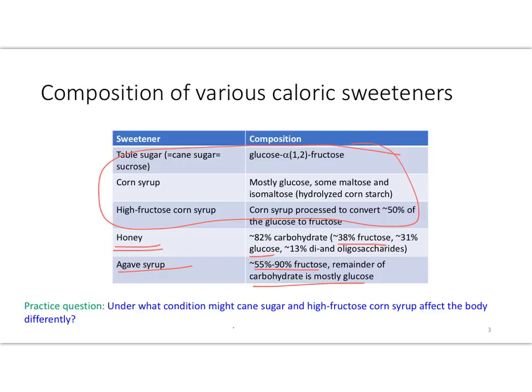Note that both table sugar and high fructose corn syrup are each about 50% glucose and 50% fructose. So the question is, under what condition might cane sugar and high fructose corn syrup affect the body differently? We think that usually there is no significant difference, but if the enzyme sucrase were ever rate limiting — the intestinal enterocyte enzyme that cleaves glucose from fructose in sucrose — if that enzyme were ever diminished or acting slowly, then these would likely have a different effect on the body.